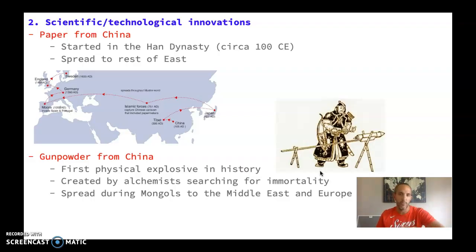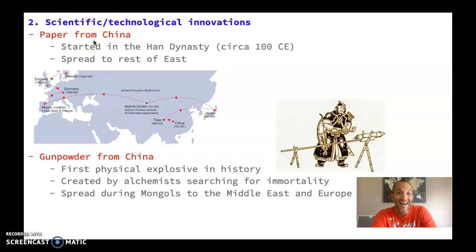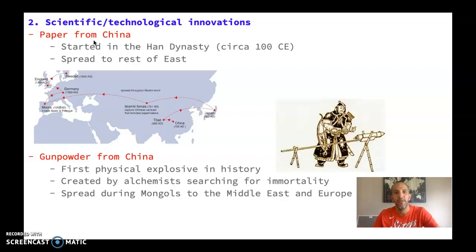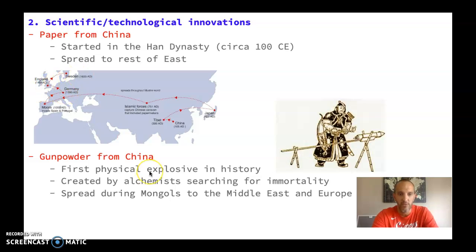We're also going to see a lot of technological and scientific innovations beyond what we've already covered — things like the compass, the astrolabe, and advances in shipmaking. We also see the spread of paper. The creation of paper started in the Han dynasty around circa 100 CE, and it's going to spread to the rest of East Asia and eventually into Western Europe in the 1300s through 1600s.